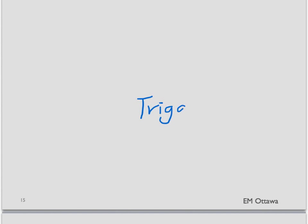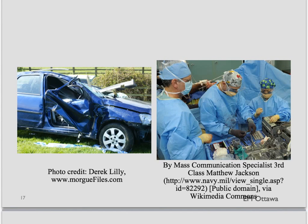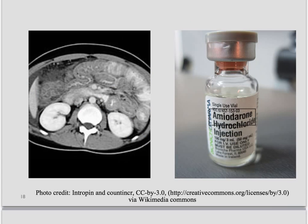Now that you have an existing hyperthyroid state, all you need is a trigger to flip the patient into a thyroid storm. What are the triggers? They include any assault on the body, such as trauma, surgery, MI, or infection. The trigger can also be a large iodine load to the body, such as CT contrast or amiodarone, which contains iodine. Therefore: hyperthyroid state plus trigger equals thyroid storm.